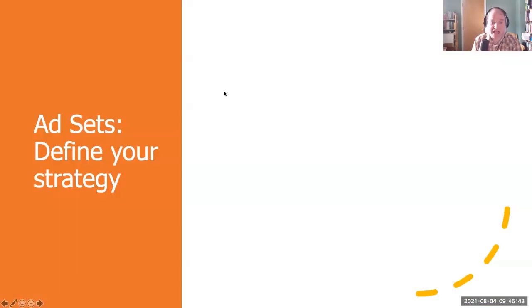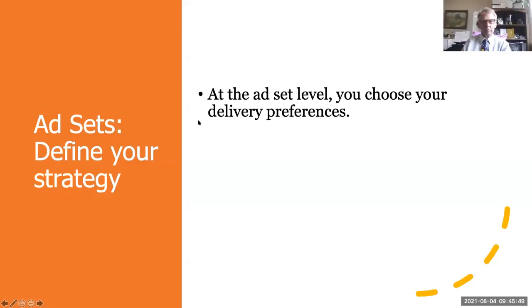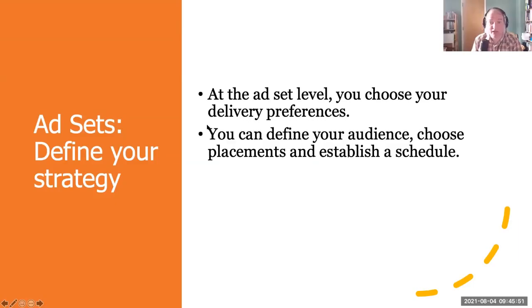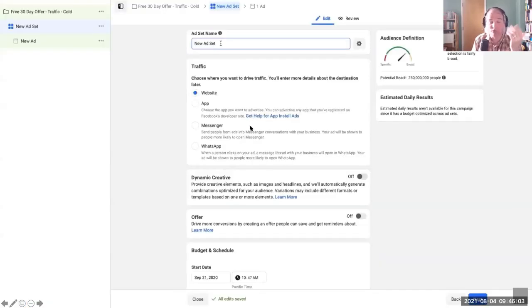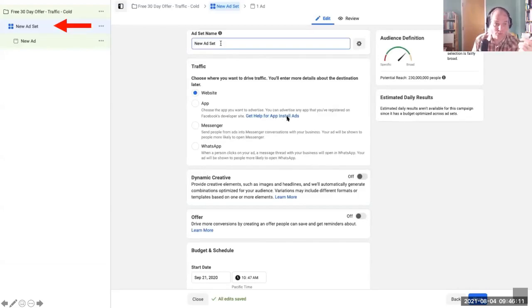Now we're going to move on to ad sets. At the ad set level, you choose your delivery preferences — you can define your audience, choose placements, and establish a schedule. Facebook allows advertisers to target their ads to a wide variety of different audience types, as we saw with boosted posts, but with even a little bit more granularity. Here we can see we've moved to the ad set level.